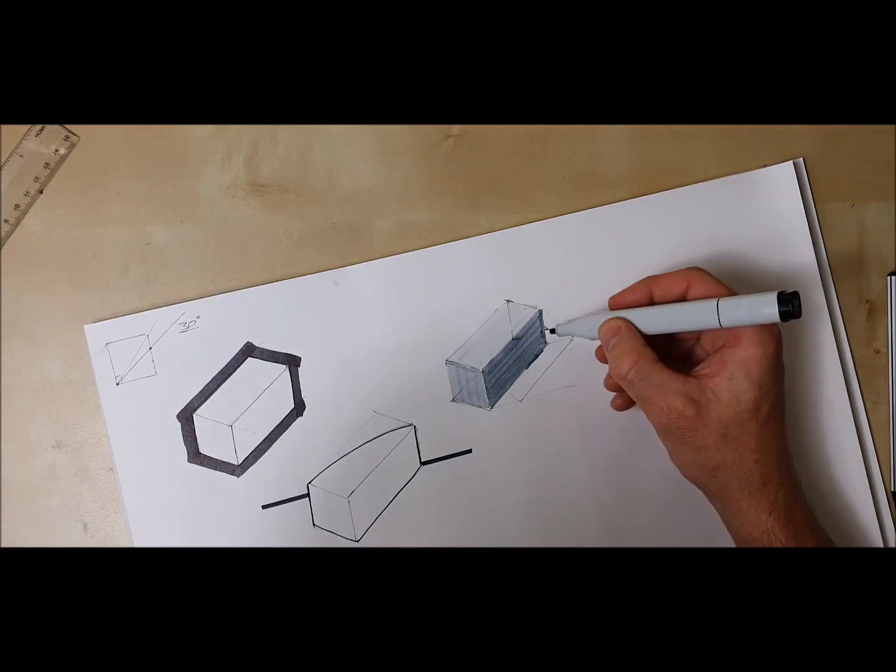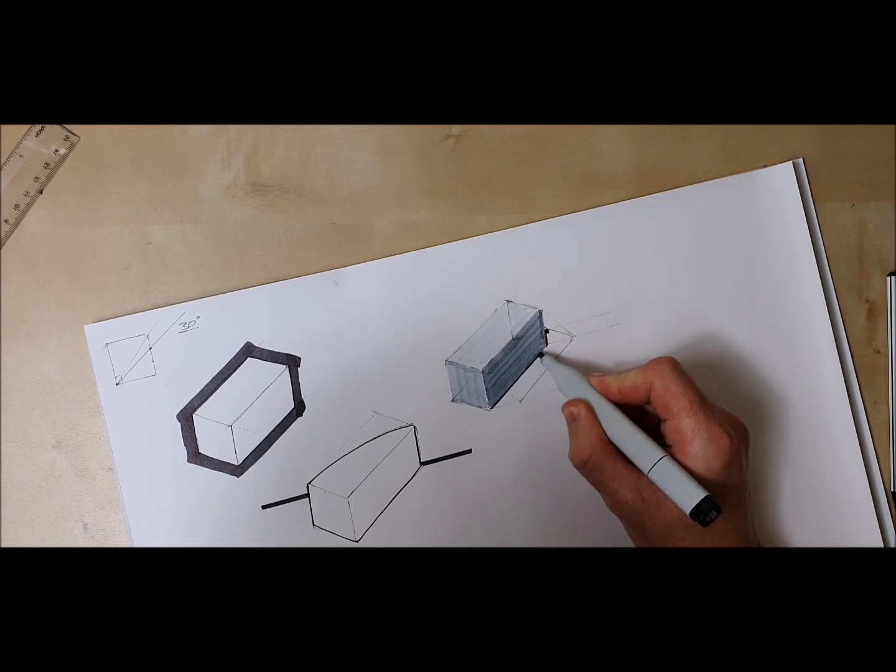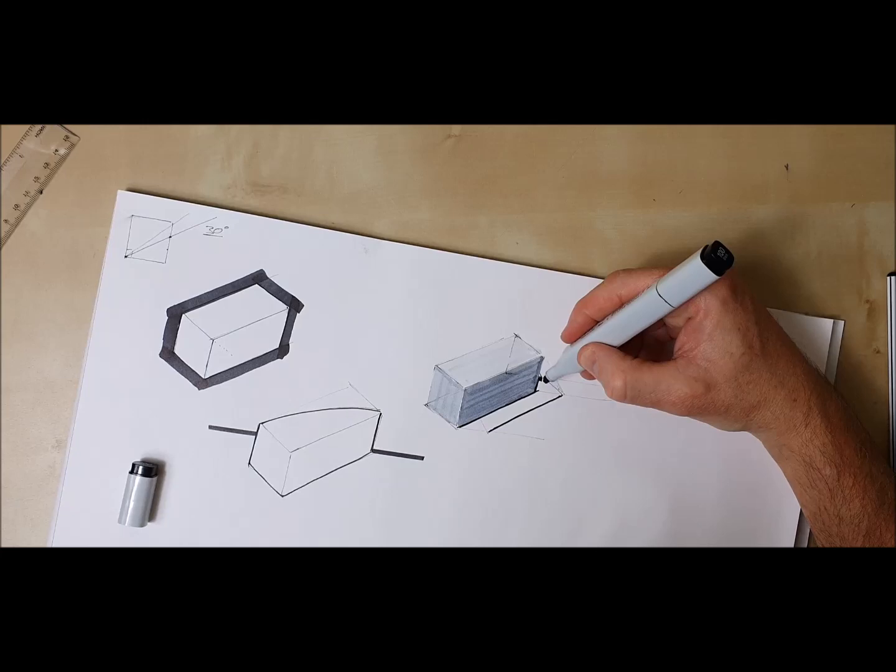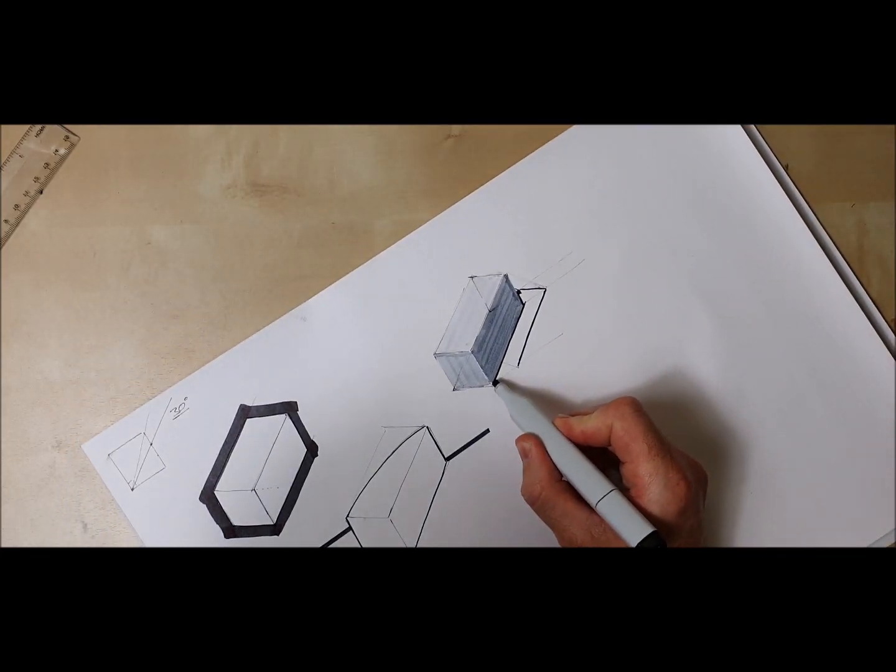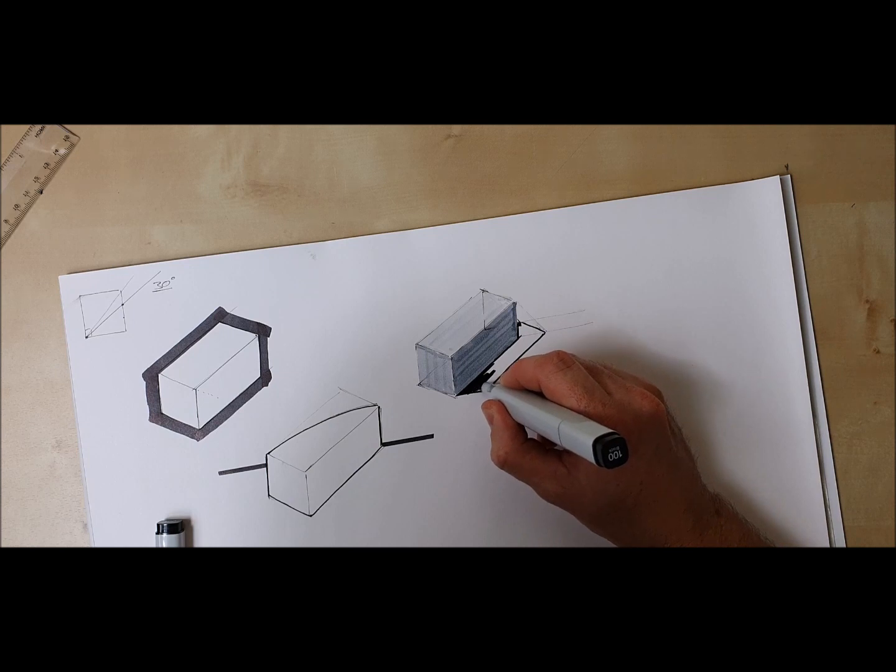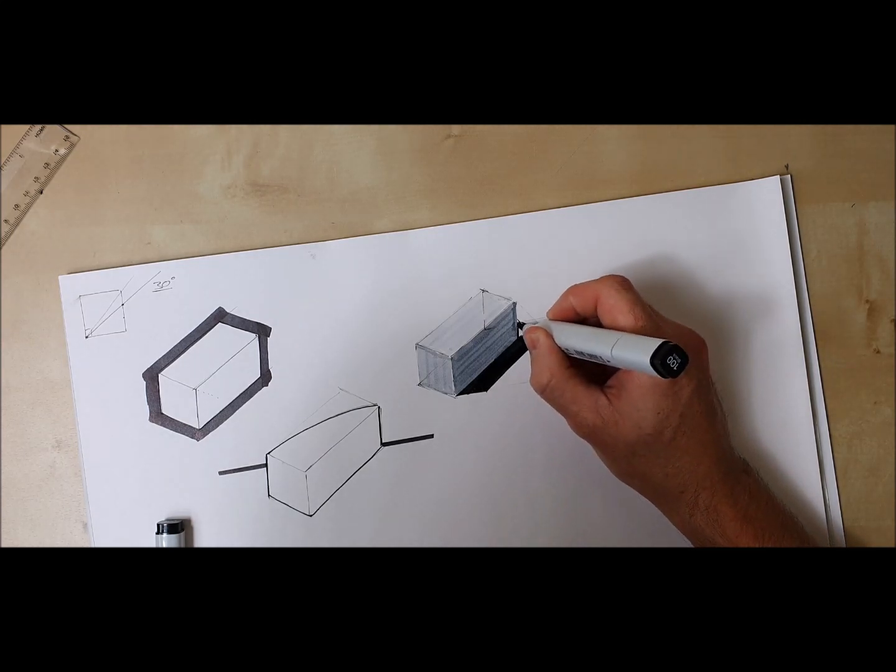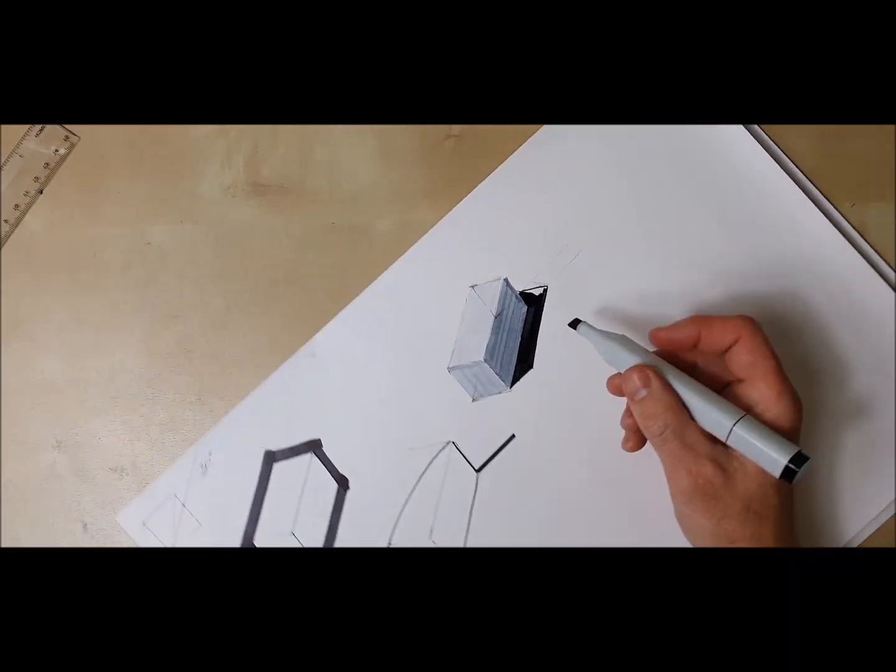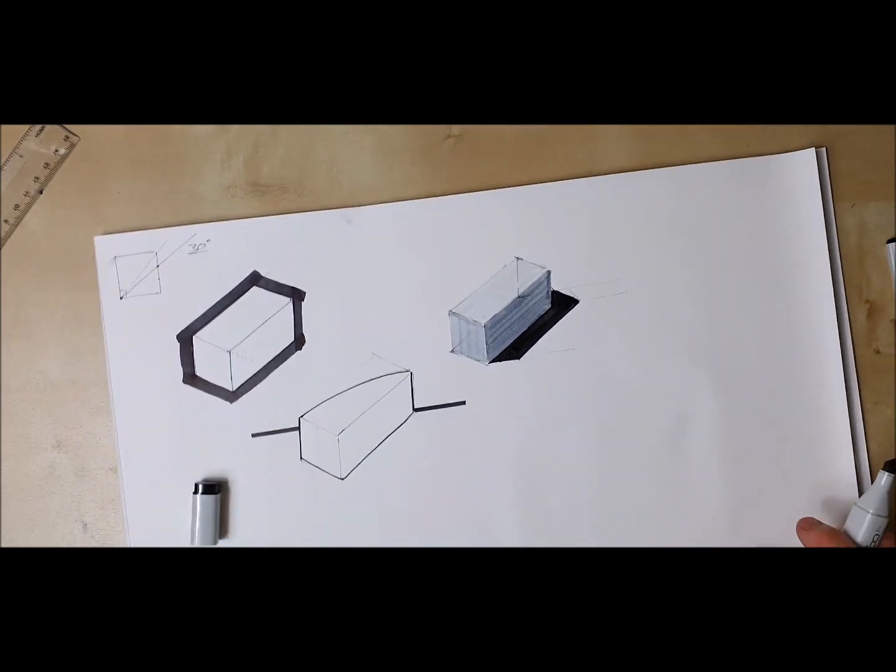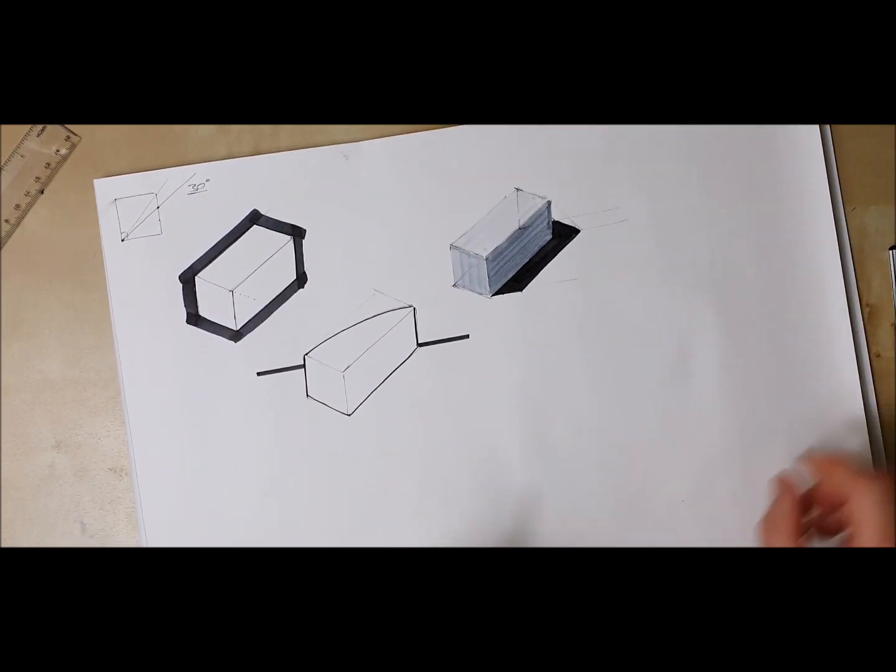The last bit is to fill in the shadow. I'm just going to use the marker on its point to tidy up that edge to keep it sharp. So all of these have been drawn by getting that 30-degree angle correct.